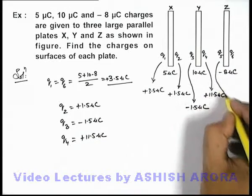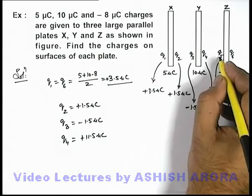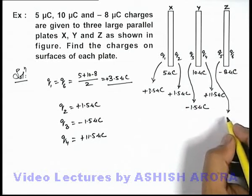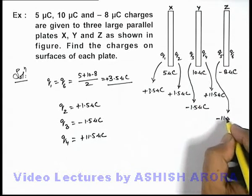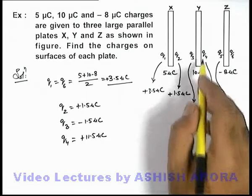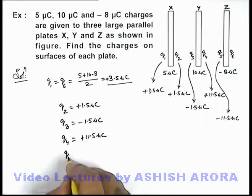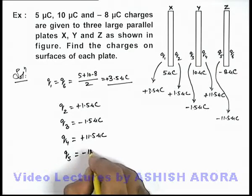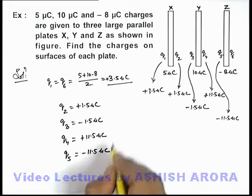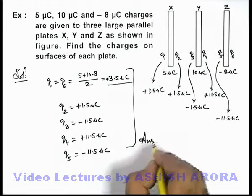Again with the same logic we can say that the charge q5 on the left face of the plate Z can be written as minus 11.5 micro coulomb, because the whole flux of q4 will terminate on q5. So here q5 can be given as minus 11.5 micro coulomb.